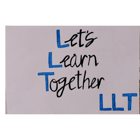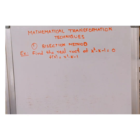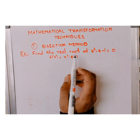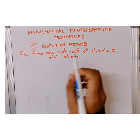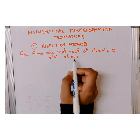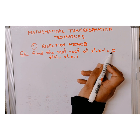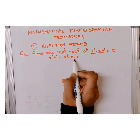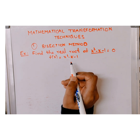Hello everyone, welcome to our channel. I'm going to make a playlist of mathematical transformation techniques and upload all related videos. Now I'm going to start with one of the root finding techniques — the bisection method. I'll be explaining this with an example. The example is: find the real root of x³ - x - 1 = 0, so f(x) = x³ - x - 1.